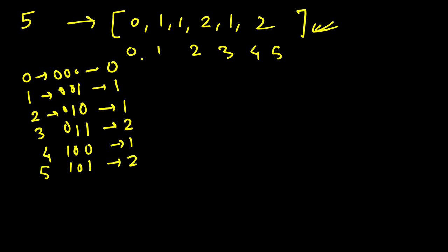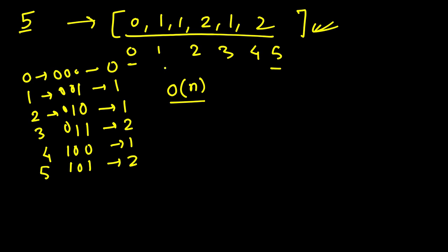You don't just need to find the number of set bits in a single given number - you need to find all the values from zero to that number. The requirement is that you have to do it in O(n) time, where n denotes the number or equivalently the size of the result. You are not allowed to do it in something like O(32n), even though 32n is technically still O(n).